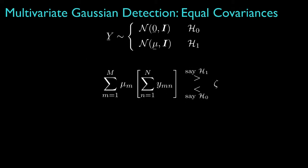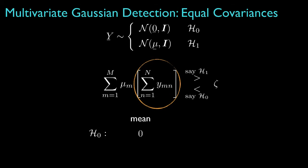The decision test then looks like this, and because the data are Gaussian for both hypotheses, and because the decision test is a linear function of those data, the resulting decision statistic will be a Gaussian random variable for both hypotheses.